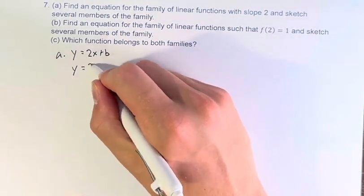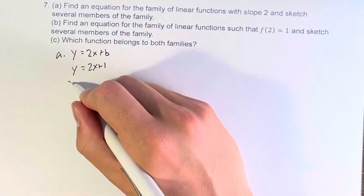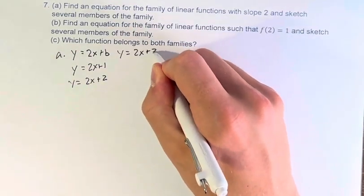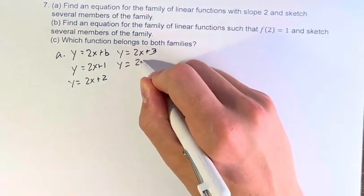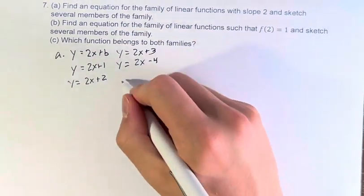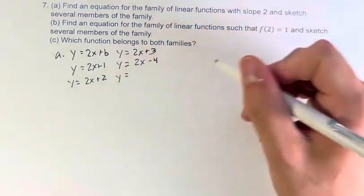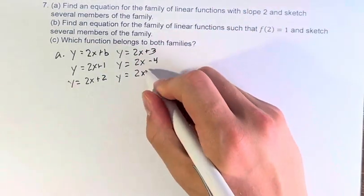So we could have y equals 2x plus 1, 2x plus 2, 2x plus 3. There can be negative values, 2x minus 4. Does not have to be an integer value. We have 2x plus pi.